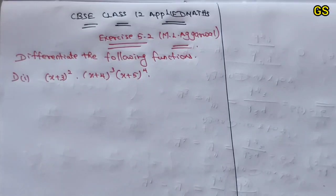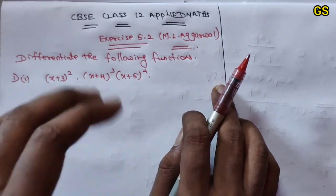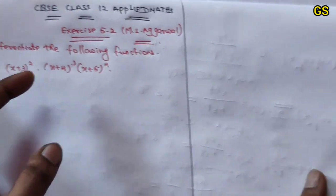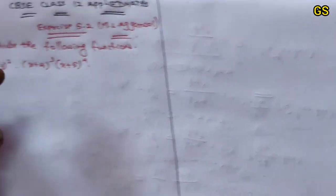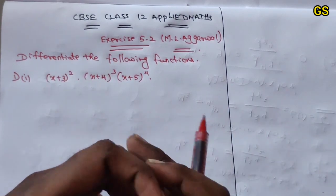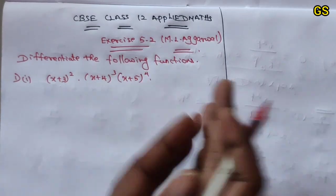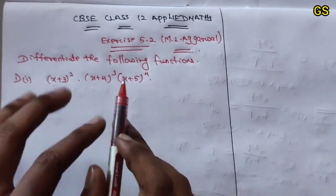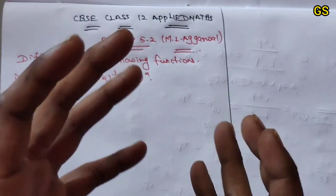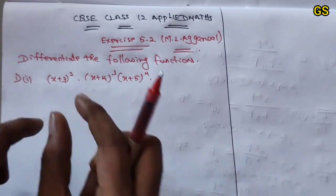Hi friends, welcome to CBC Class 12 Applied Magnetic System 5.2. You will see the solution. If you want to subscribe, click on the subscribe button. Now you will see the introduction of this video and the description link. I will tell you the introduction.